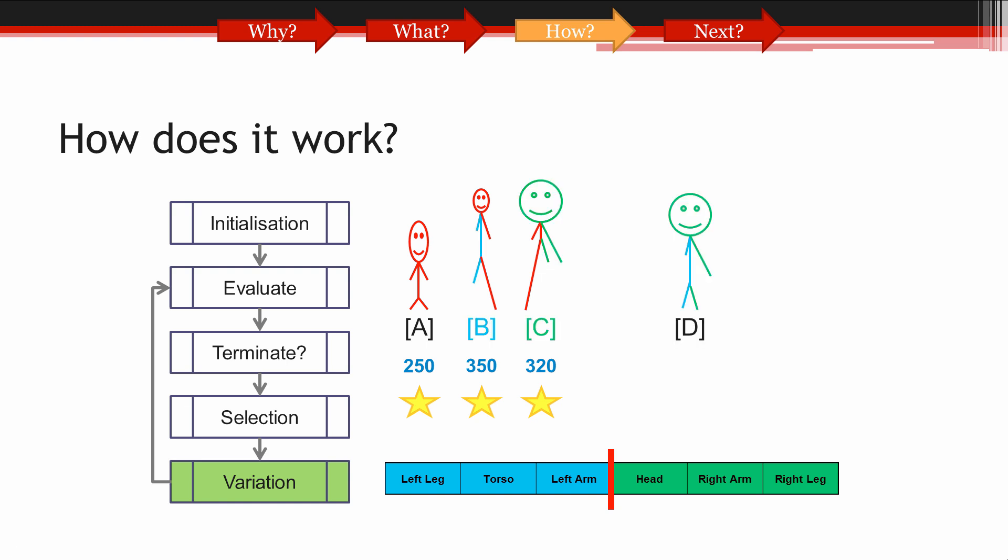Here we can see parent B and parent C have produced offspring D. I've colour coded the parts of the stick figures to indicate what has been passed on to the offspring, and which parent it's come from. Next, we can see parent C and parent B have produced offspring E. You may notice the same parents have been selected for the crossover, but in a different order, which has changed which parts have been passed on to the offspring.